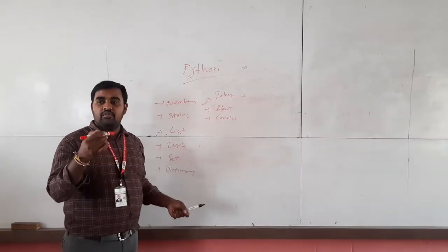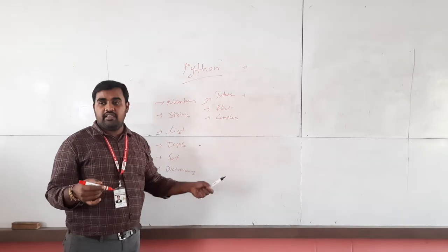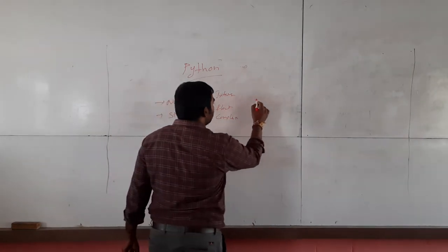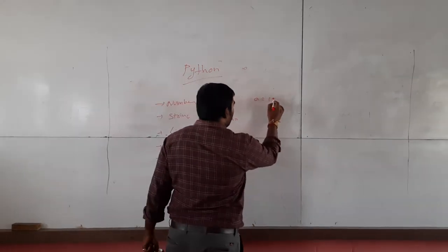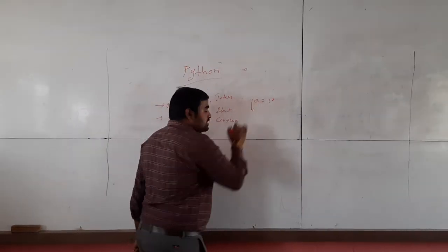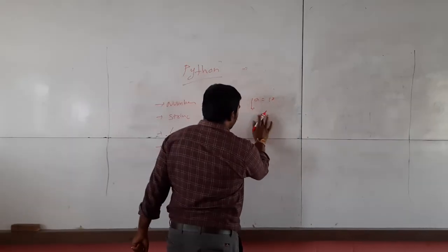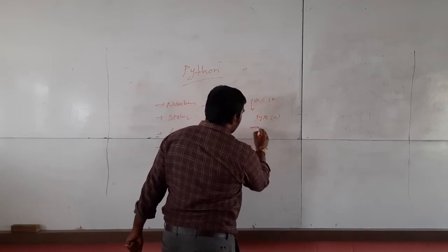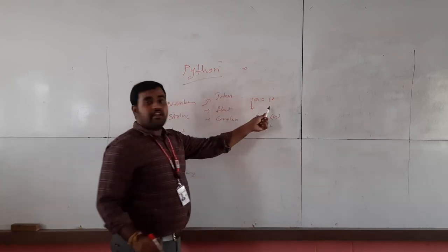There is no need to declare your variable — no declaration is required in Python. Suppose if you want to assign any value, you can directly assign it. For example, if I want to assign the value 10 to the variable A, you directly assign the value. Then how can you find out which data type it is? By using the type() function — type(A) — it will automatically show the result as integer.